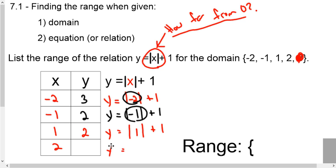So the absolute value of positive 1 is 1, and then we add on this 1 on the outside, and we still get 2. And the same thing is going to happen right there for this positive number here. What's the absolute value of 2? It's still 2, and 2 plus 1 is 3.